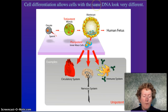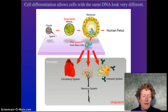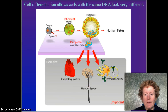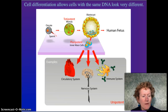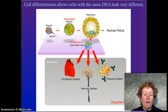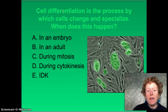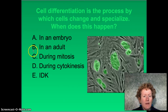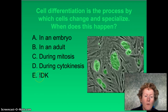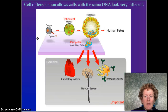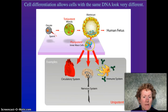Since every cell in an organism has exactly the same DNA — every cell in your body has the same DNA, except for red blood cells and some sex cells — cell differentiation makes all your cells look very different. When you were a zygote, all the cells in the embryo developed into your heart cells, your nervous system, and your immune system. Cell differentiation is the process by which cells change and specialize, and this happens in an embryo.